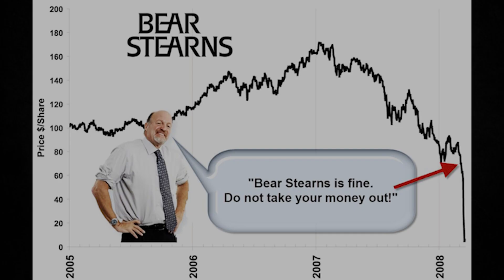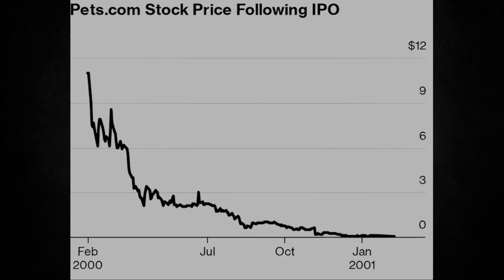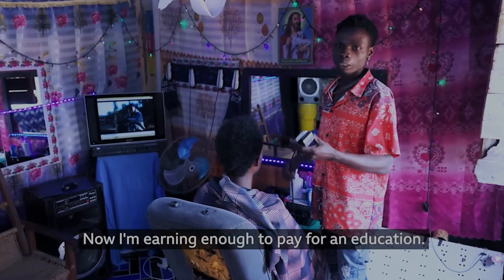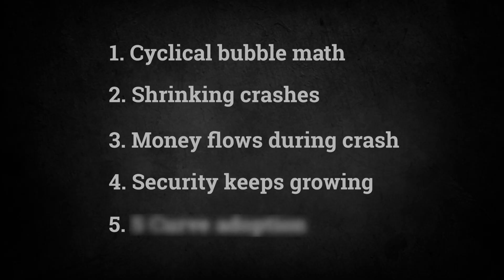Why does this matter? In every bubble studied, usage doesn't just decline — it goes to zero when the bubble bursts. Companies disappear, assets become worthless, and nobody uses them anymore. No other asset class even has this kind of transparent usage data. You can't see real-time active users for gold, stocks, or real estate. Bitcoin's blockchain gives us unheard-of visibility into actual utility. High commitment during bad times doesn't equal speculation — it equals genuine value creation. So the fourth mathematical proof: network security and utility grow during market fear.